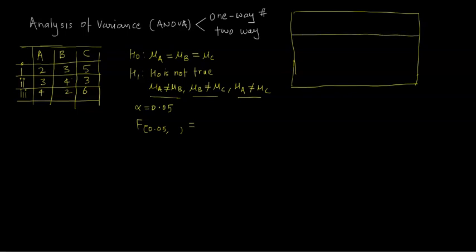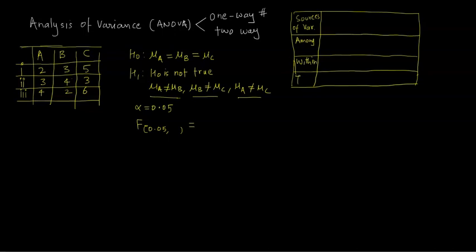The ANOVA table has sources of variation. One is called 'amongst' and the other is called 'within,' with a total row. 'Amongst' refers to the same person showing different reactions to different drugs — for example, drug A gives 2 units, drug B gives 3, drug C gives 5. That's the fluctuation amongst the three groups. 'Amongst' means amongst three groups: group A, group B, and group C — so the fluctuation is across groups for the same person.